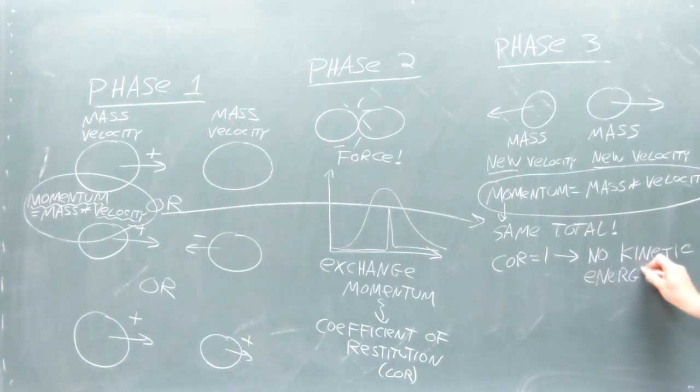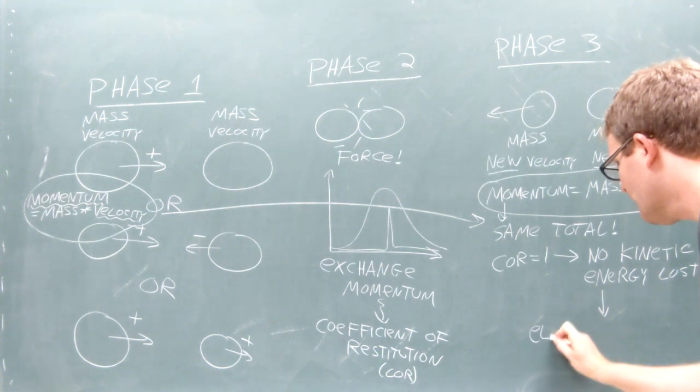A coefficient of one means that no kinetic energy was lost during the interaction. We call this ideal case an elastic collision.